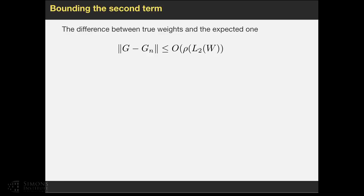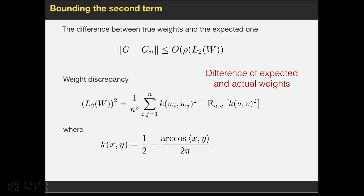Now, let's bound the second term, which is the difference between G and Gn. It is upper bounded by some function of this L2W, which we call the weight discrepancy. The weight discrepancy is defined as follows: it's a pairwise similarity between the weights Wi and Wj measured by this kernel, where this kernel is related to this rectified linear function, and also minus this expected quantity. The intuition behind this is that G is about expected quantity, and Gn is about the actual weights. So the difference is upper bounded by the quantity which depends on expected weights and the actual weights.